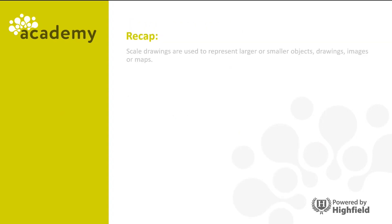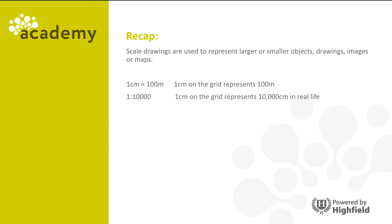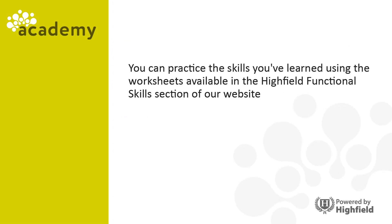So let's recap. Scale drawings are used to represent larger or smaller objects, drawings, images or maps, and you may be given scales in any one of three formats: 1 cm equals 100 meters, a ratio such as 1 to 10,000, or a distance marked by arrows. You can practice the skills you've learned using the worksheets available in the High Field Functional Skills section on our website. Thanks for taking part and I'll see you on the next session.